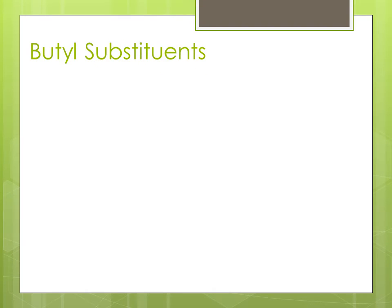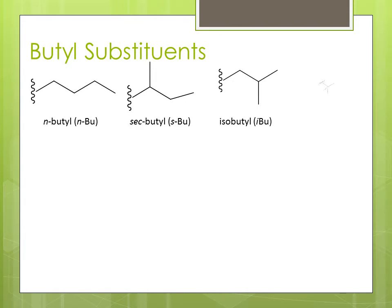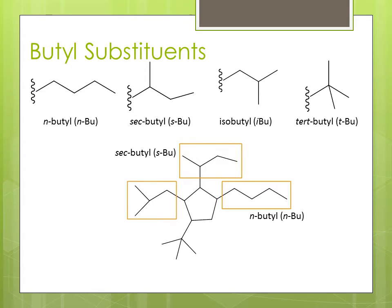There are four butyl substituents: n-butyl, sec-butyl, isobutyl, and tert-butyl. Here's an organic molecule using all four butyl substituents — n-butyl, sec-butyl, isobutyl, and tert-butyl.